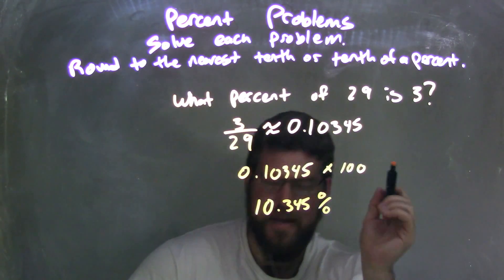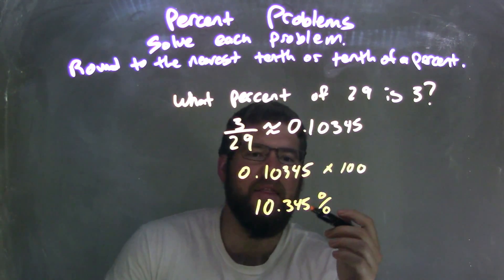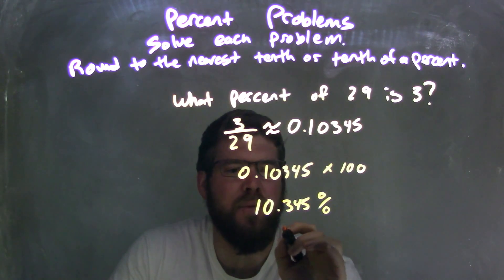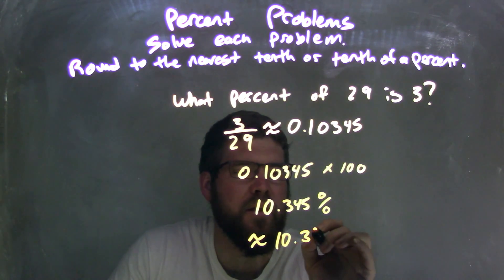Now, let's round to the nearest tenth, tenth of a percent. So I look at the 3. I see that the 4 is under 5, so the 3 stays the same. My approximate answer here is 10.3 percent.